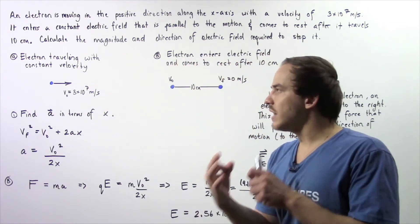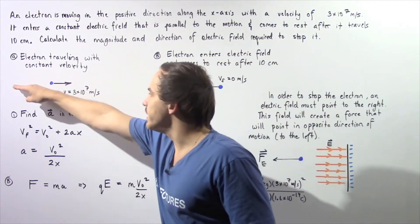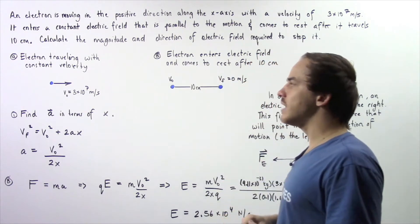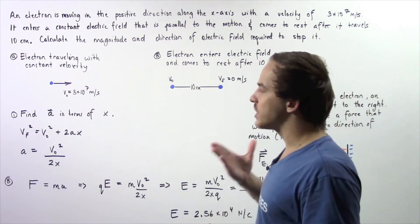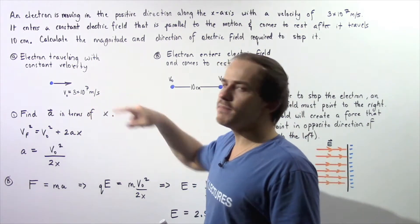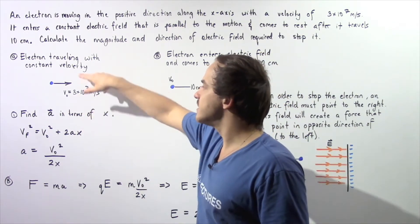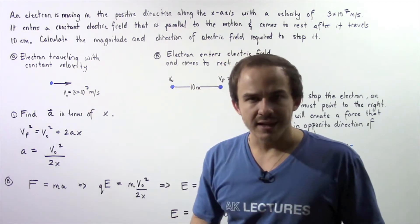We have an electron that is traveling to the left in the positive direction along the x-axis, traveling with a constant velocity of 3×10^7 meters per second.